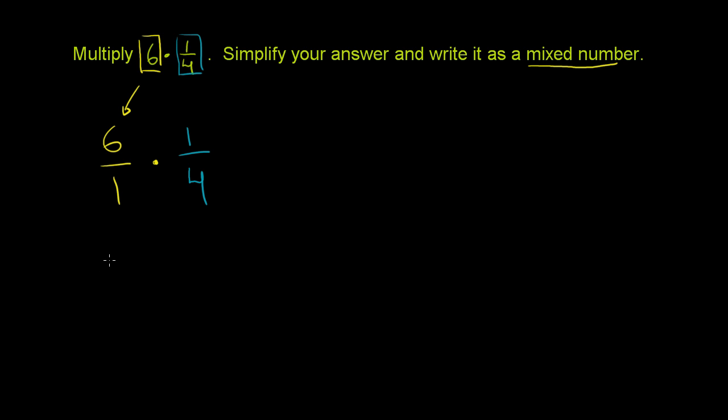And then we just multiply the fractions. We multiply the numerators: 6 times 1 is our numerator. And 1 times 4 for our denominator, the number on the bottom. So this becomes 6/4.